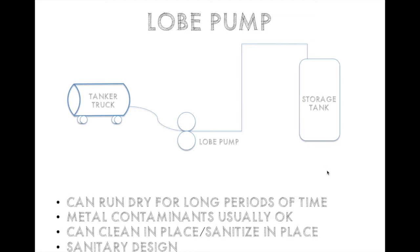The lobe pump can run dry for long periods of time. Metal contaminants are usually okay — if there's a bolt in the tanker truck, it will likely pass through the lobe pump without damage. It can be cleaned in place or sanitized in place by passing steam through it after unloading, which cleans and sanitizes it without harming it, making it a very sanitary design.